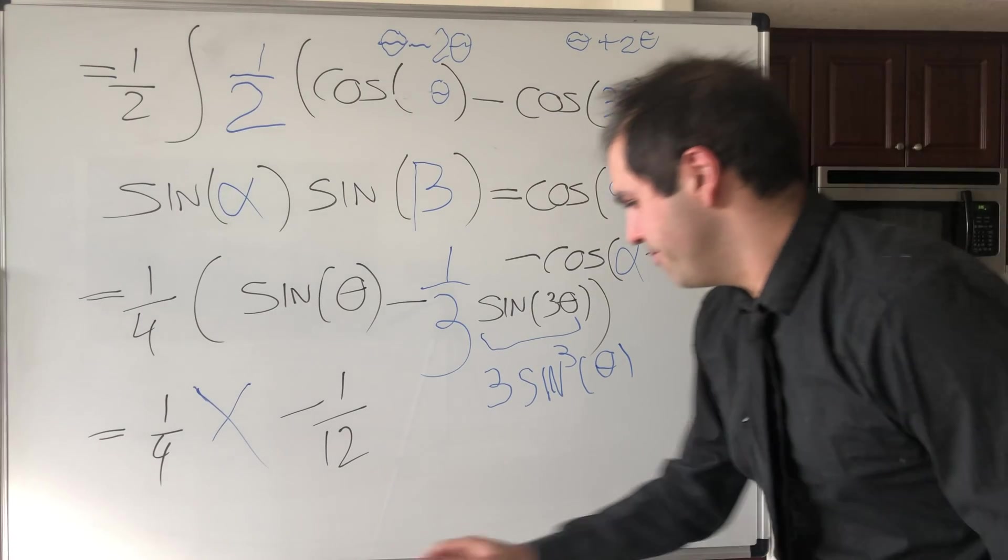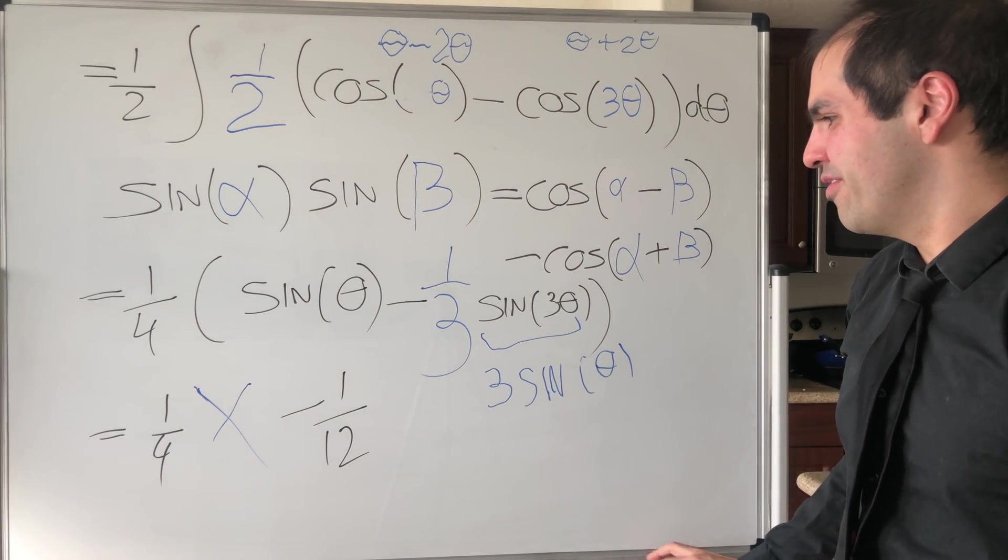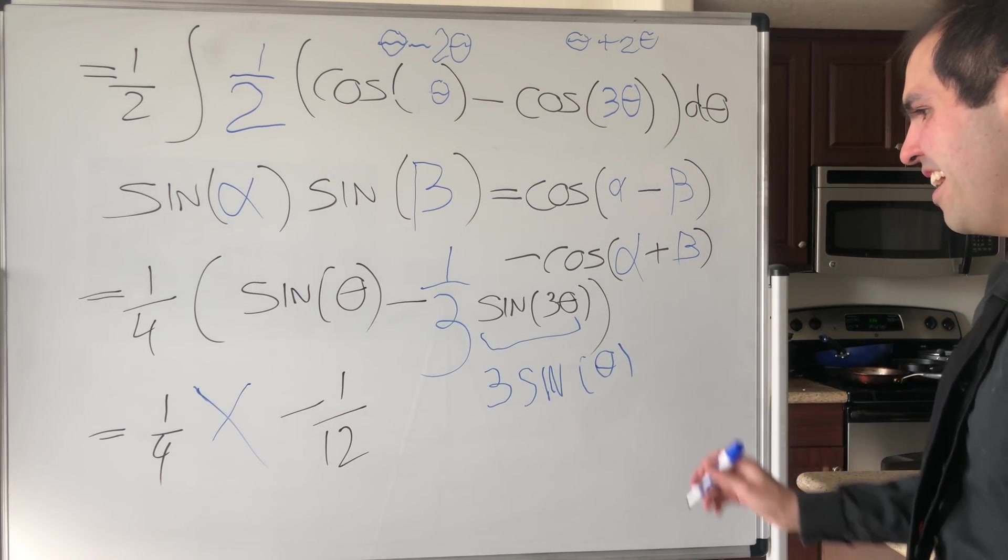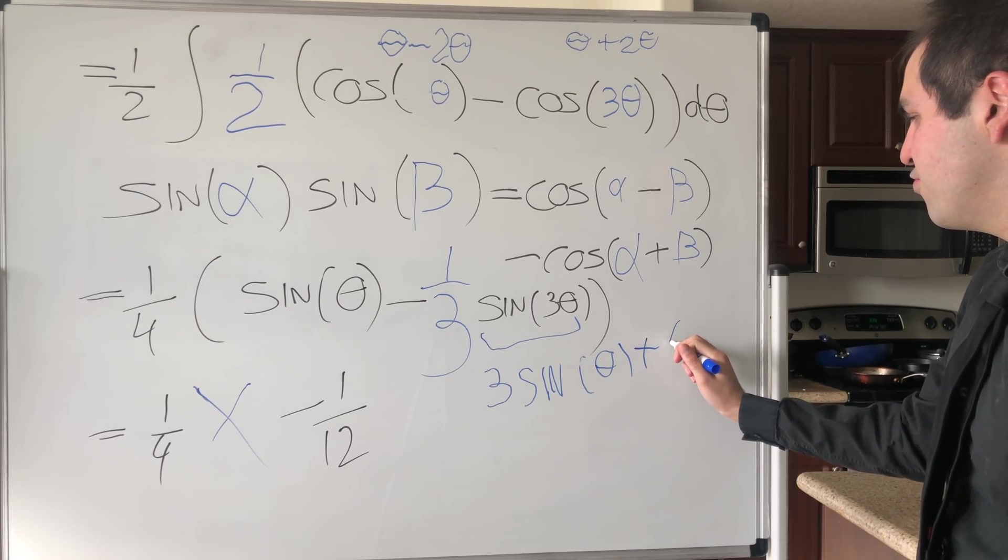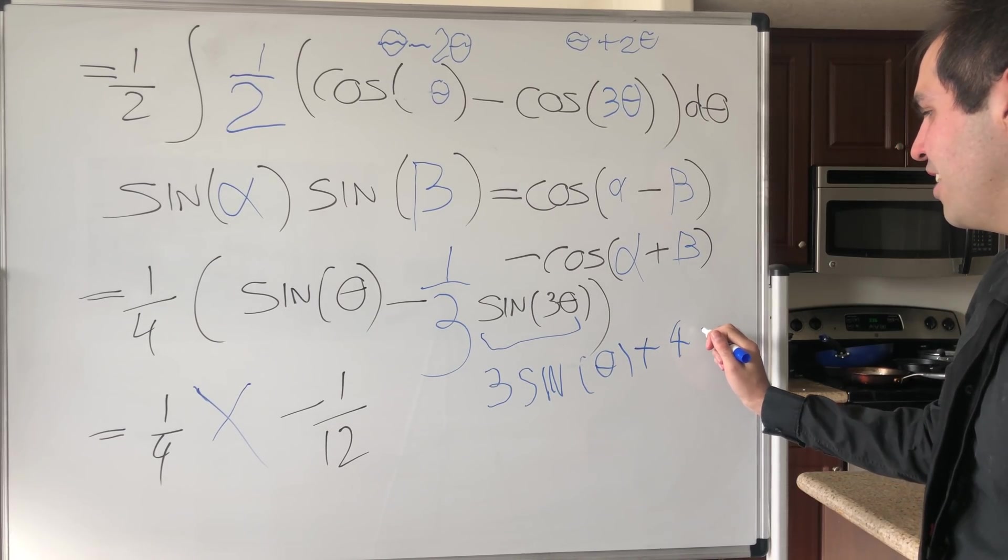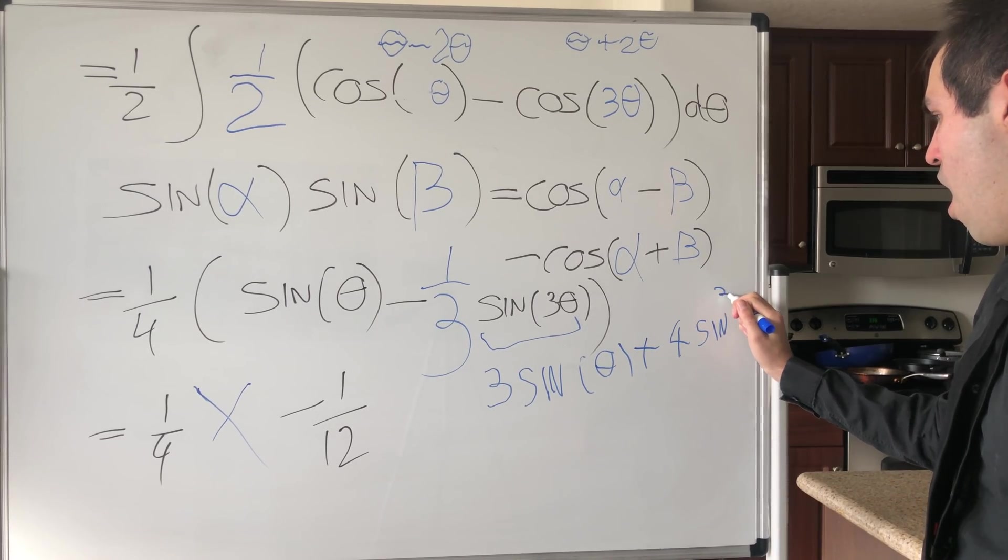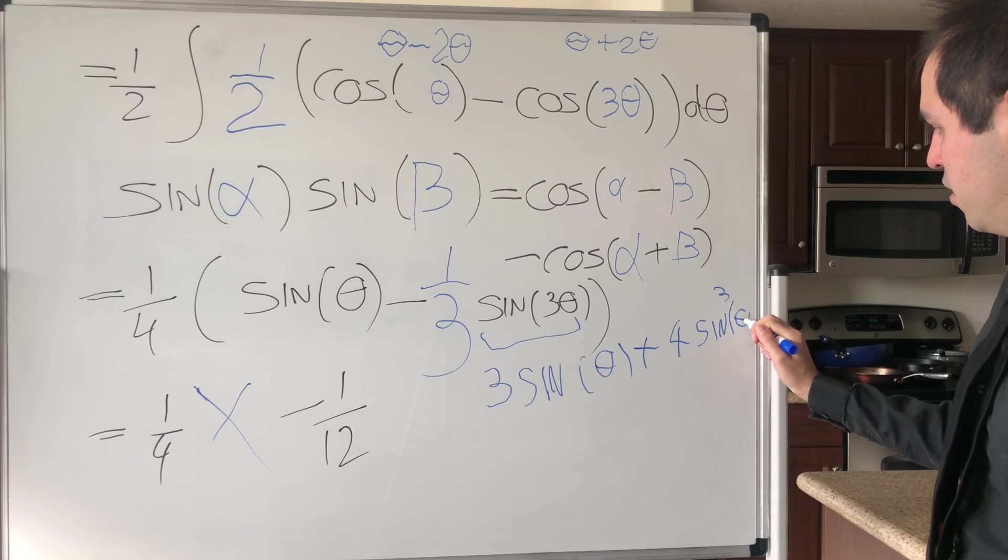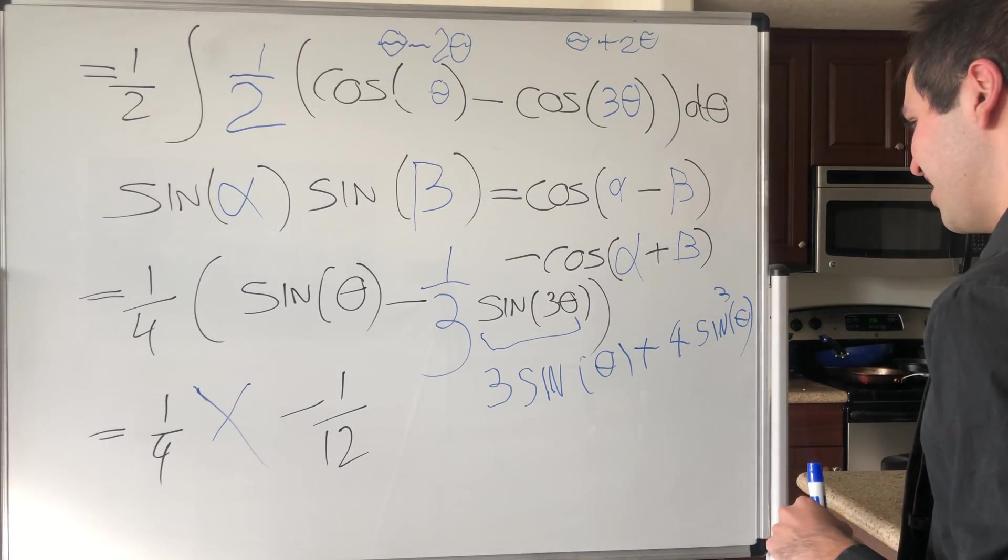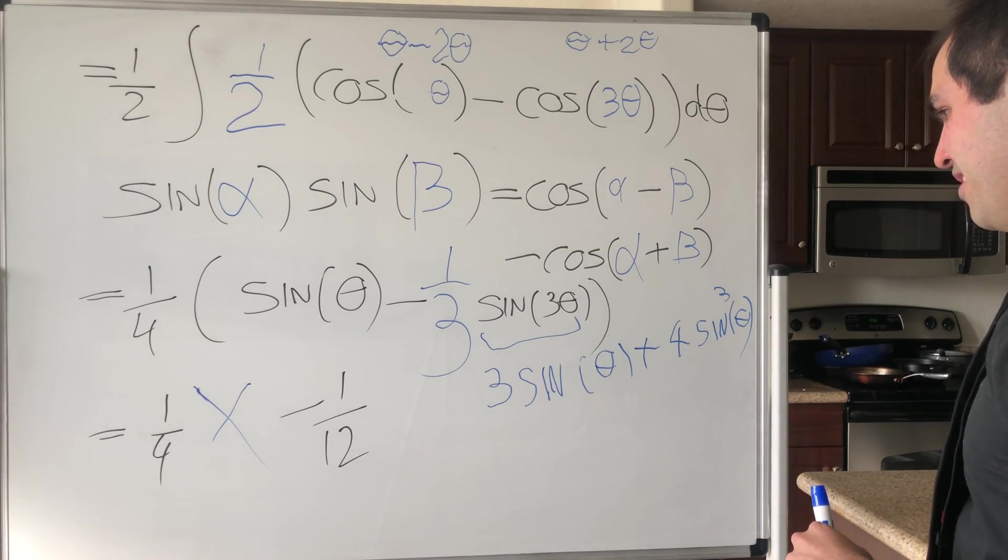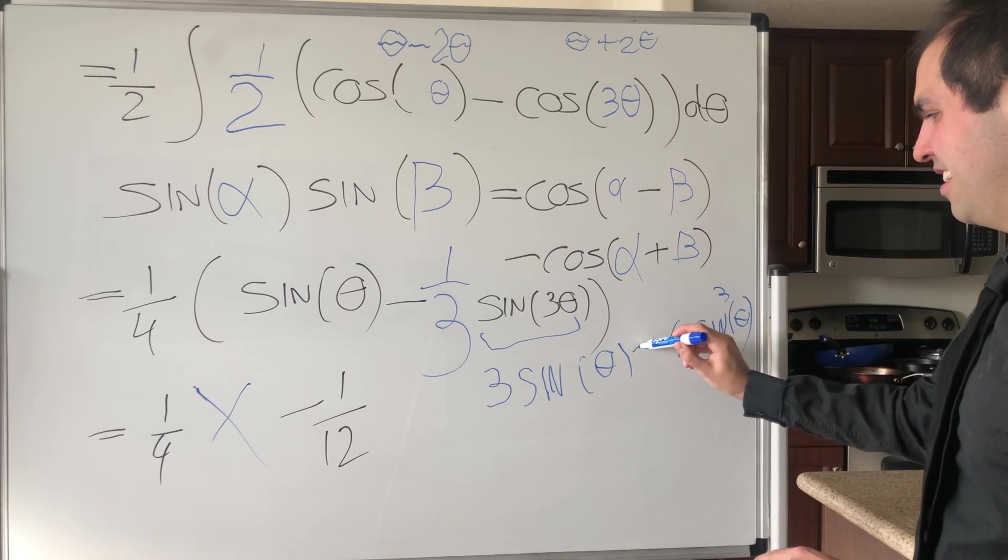So no, my bad. It should be three sine of theta to cancel out with this x, and then plus, I believe, four sine cubed of theta. I know, so intense. Let me just check, and then I hope it, no, minus, okay, almost, there we go. There we go.